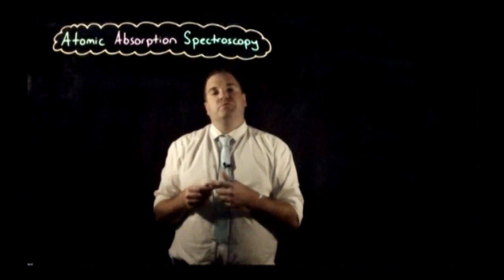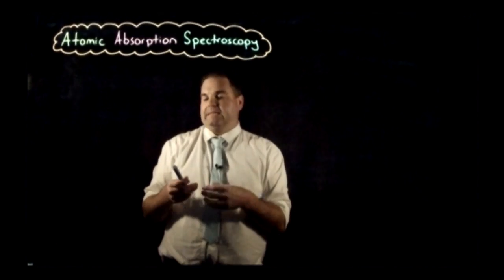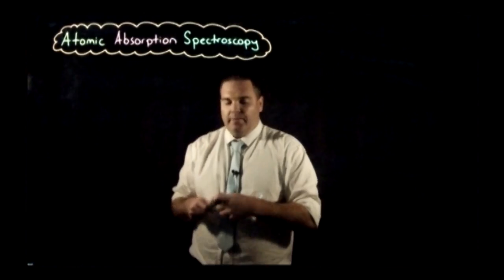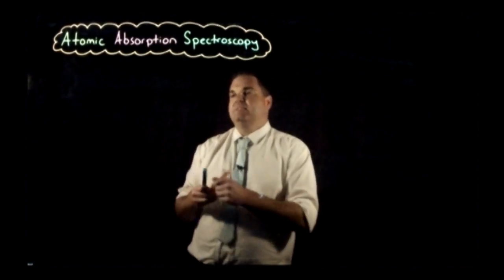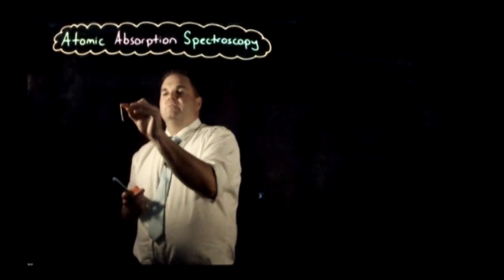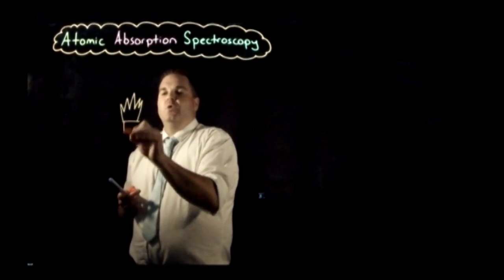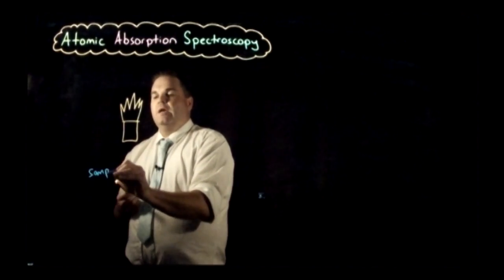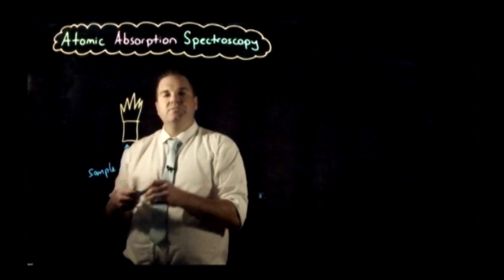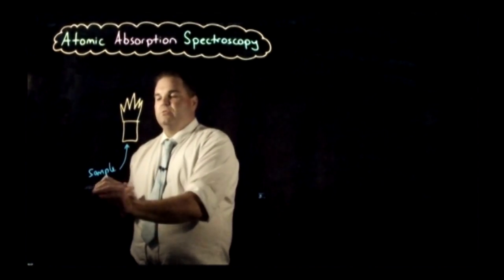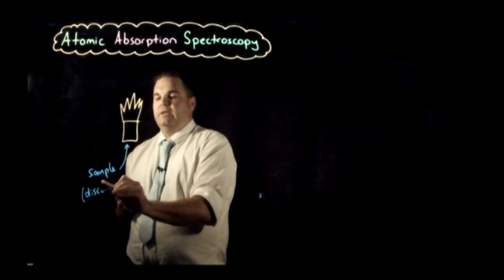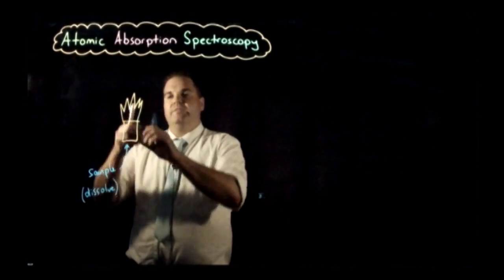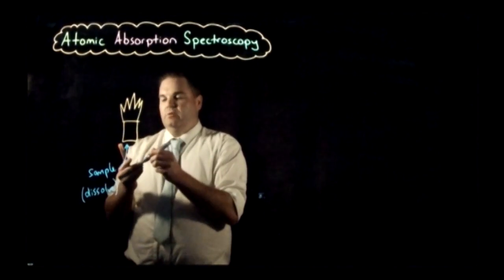Looking at the principles of atomic absorption spectroscopy, we're going to look at the machine used to perform it. First, we have a flame. We have a device which has a sample that we're trying to work out, and that sample is atomized or vaporized into the flame. We dissolve the sample in a suitable solvent, then inject it through the flame, which atomizes it so we just get the atoms we want to look at.